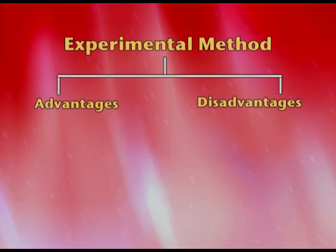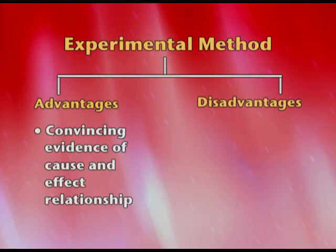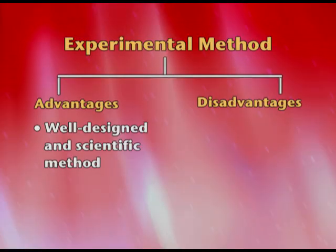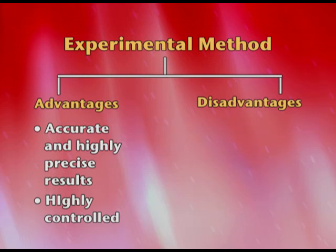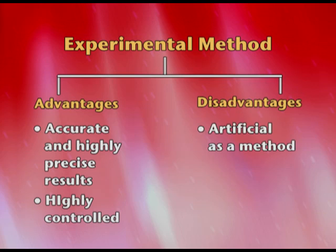Let us look at the advantages and disadvantages of the experimental method. The main advantage is convincing evidence of a cause and effect relationship — it is a very strong, accurate, and scientific prediction. It is a very well-designed scientific method, therefore results are very good and highly accurate due to high control. The disadvantage is that it is very artificial as a method, because subjects are brought into a laboratory with set conditions, which may not be applicable to real-life settings.